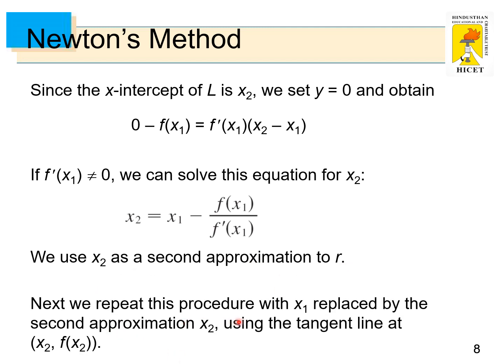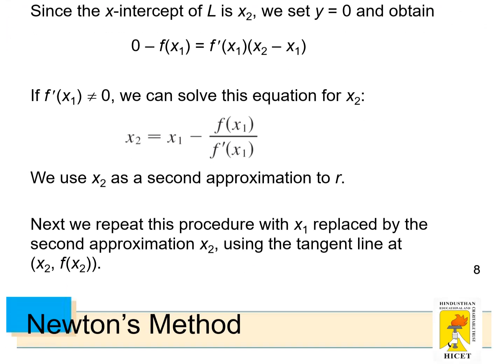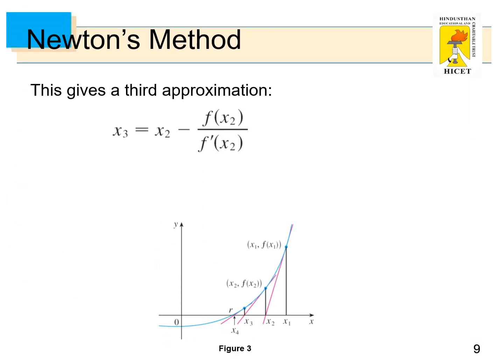Next, we repeat this procedure with x1 replaced by the second approximation x2 using the tangent line at (x2, f(x2)). This gives the third approximation x3 = x2 - f(x2)/f'(x2).